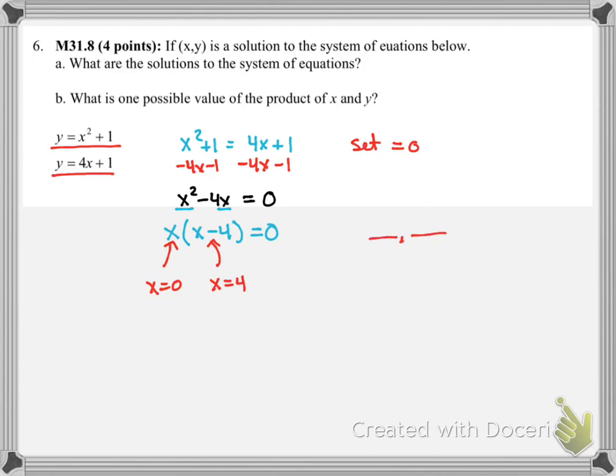As I start my ordered pairs, I know I'm going to have 0 comma something for Y, and 4 comma something for Y.